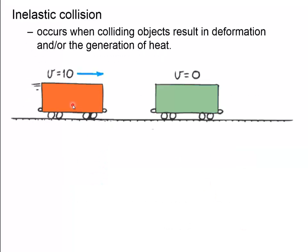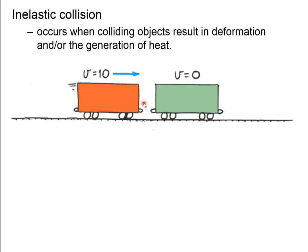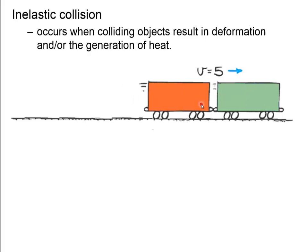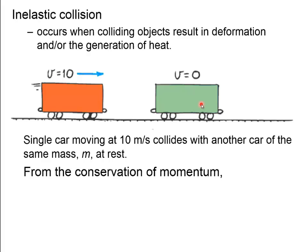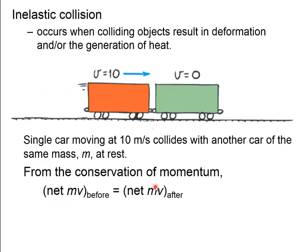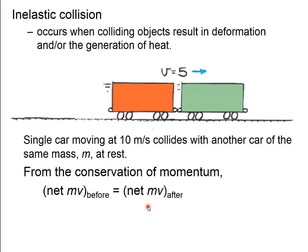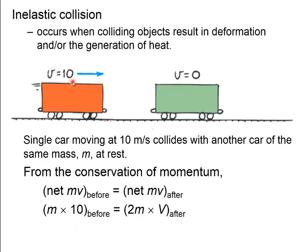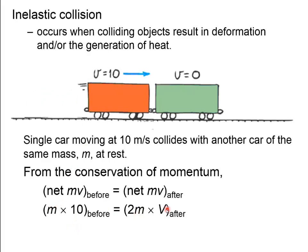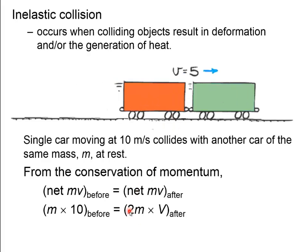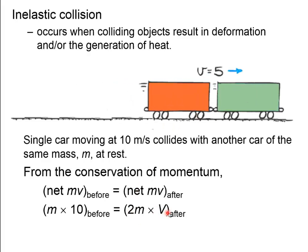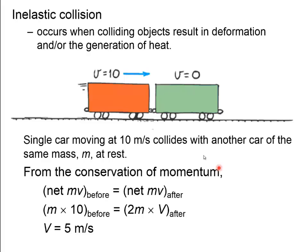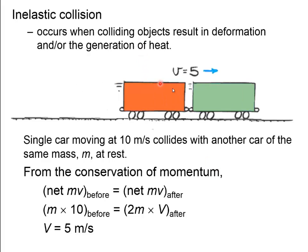An example here: you've got a cart going at 10 meters per second. It collides with another cart, equal mass, and then they both end up going at 5 meters per second. Conservation of momentum, before equals after. Before, the green cart was at rest, so you just got 10 meters per second times the mass of the first one. Afterwards, they're hooked together, so their mass is 2m, times v. You solve for v, you get 5 meters per second. A little smoke there is showing that there was some energy lost during the collision.